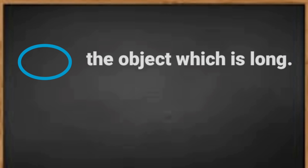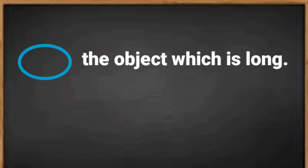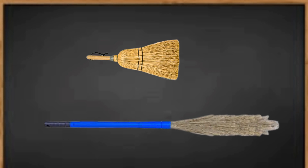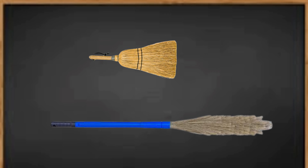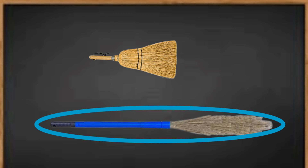Circle the object which is long. In this picture, the first broom is short and the second broom is long, so we will circle the second broom which is long.